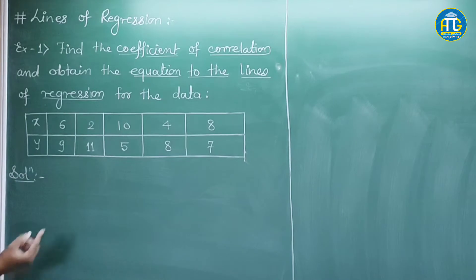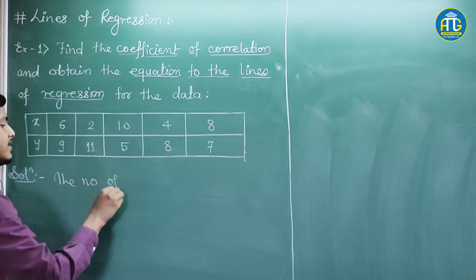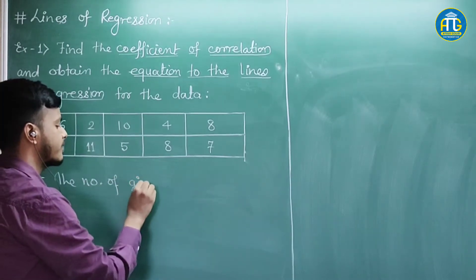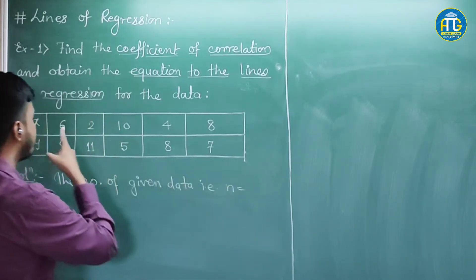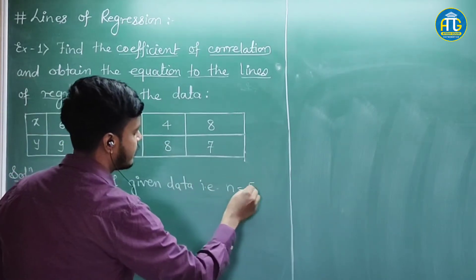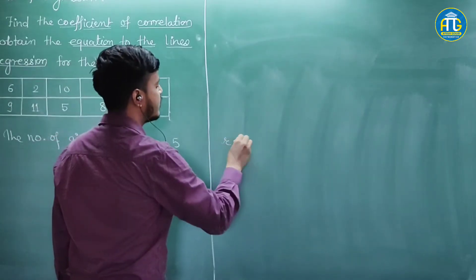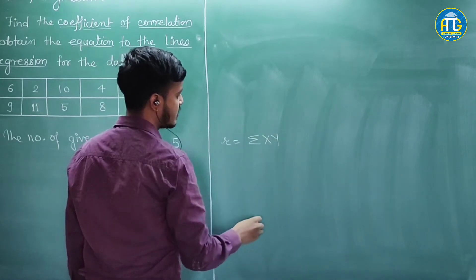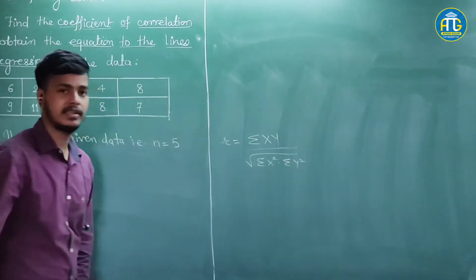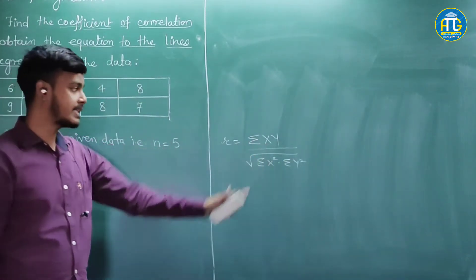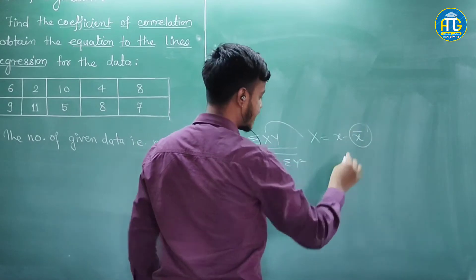We start with the given data. The number of given data, n, is equal to 5. We need to find the coefficient of correlation: summation XY upon under root of summation X square into summation Y square. So let us find out capital X. Capital X is nothing but x minus x̄, so first of all we will find out x̄ and ȳ.